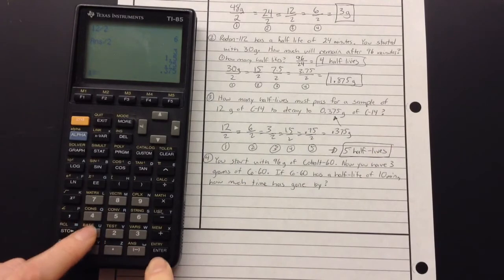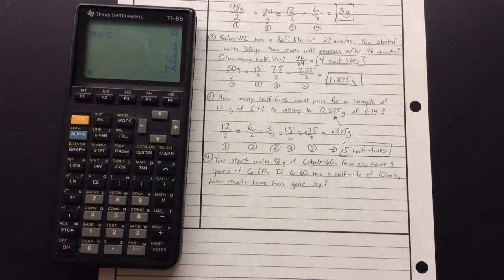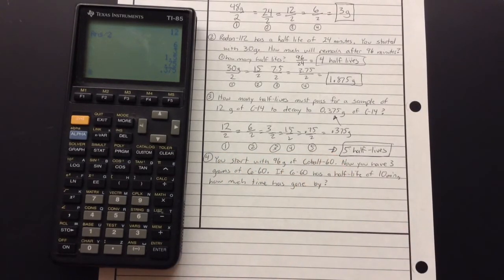Now, I could have just done that on my calculator. Started with 12. Divided by 2. 1, 2, 3, 4, 5 times to get to the 3.75. But I like to keep track of it on paper just to make sure that I don't forget.